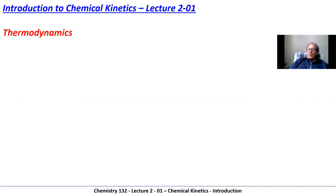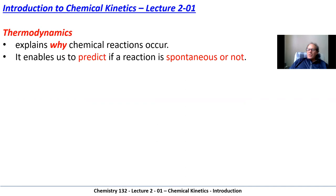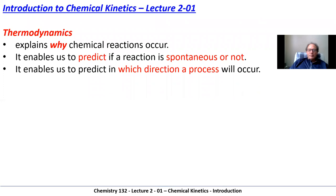So far we've studied thermodynamics, and thermodynamics effectively explains why chemical reactions occur. It enables us to tell whether or not they're spontaneous. We can do that by finding the value of Gibbs energy — if it's negative, it's spontaneous — or we could find the entropy change for the universe, which, if it's positive, tells us the reaction is spontaneous. It also tells us whether the reaction proceeds in the forward or reverse direction, as written.